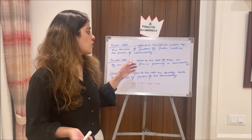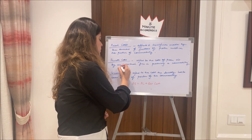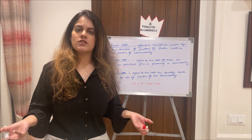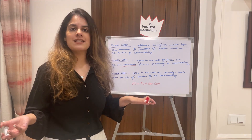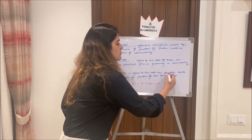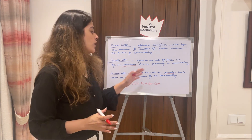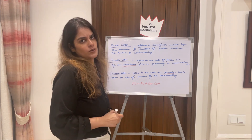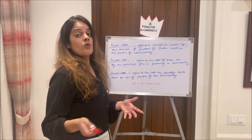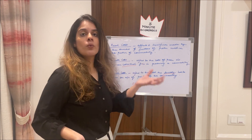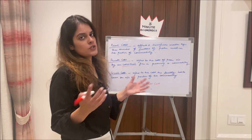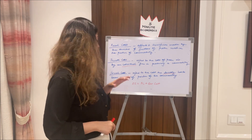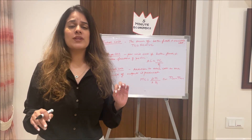Private cost is the cost of production incurred by an individual in producing a commodity — whatever a single person bears is their private cost. Social cost refers to the cost that the society bears on account of production of a commodity. Social cost = private cost + external cost. For example, a factory owner bears the private cost, but society also bears the external cost — pollution and negative externalities caused by that production. That wider cost borne by society is the social cost.